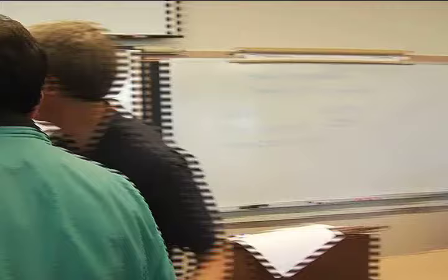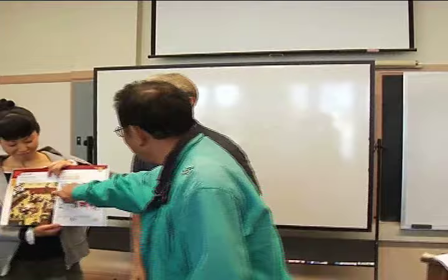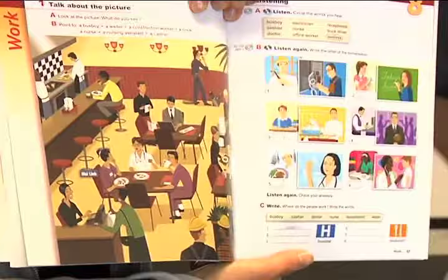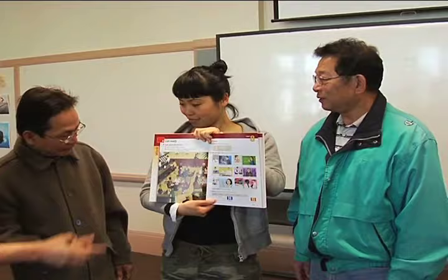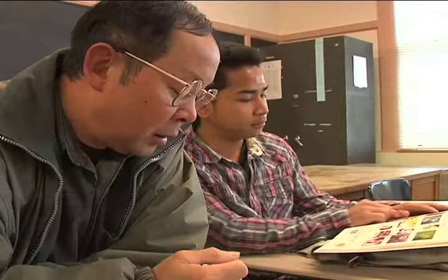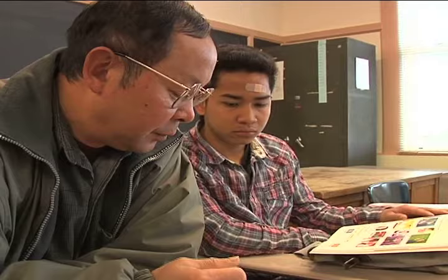Before I ask students to do anything, it's very important to model the activity. Now I say 'busboy' and you point. There's a natural progression in the modeling — first teacher and student: I say the word, the student points. Then we move to student–student: I invite another student up, the first student speaks, the second points, and then we switch roles. There is a movement from teacher to student and then to everyone participating in the activity.